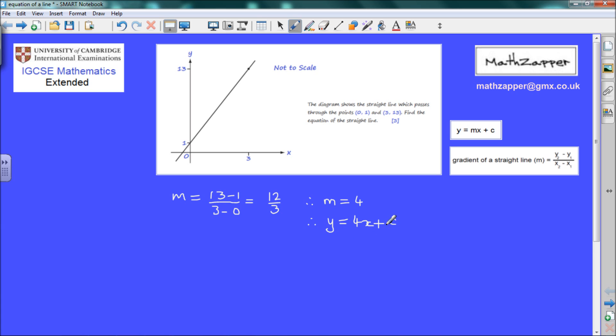How to get the value of c is simply sub in the values of one of the coordinate pairs and we will choose 0 and 1. So we are going to be using the coordinate pair 0 and 1 and we are going to sub those values into this equation.